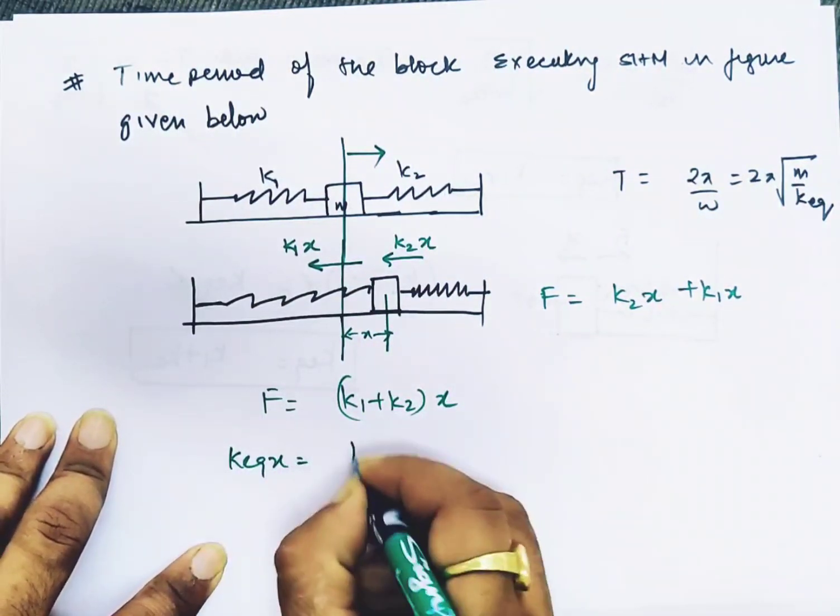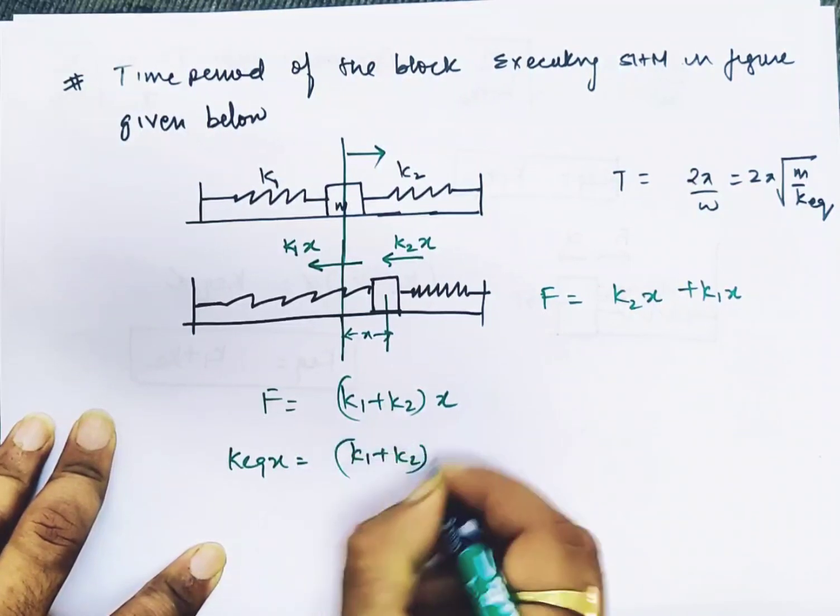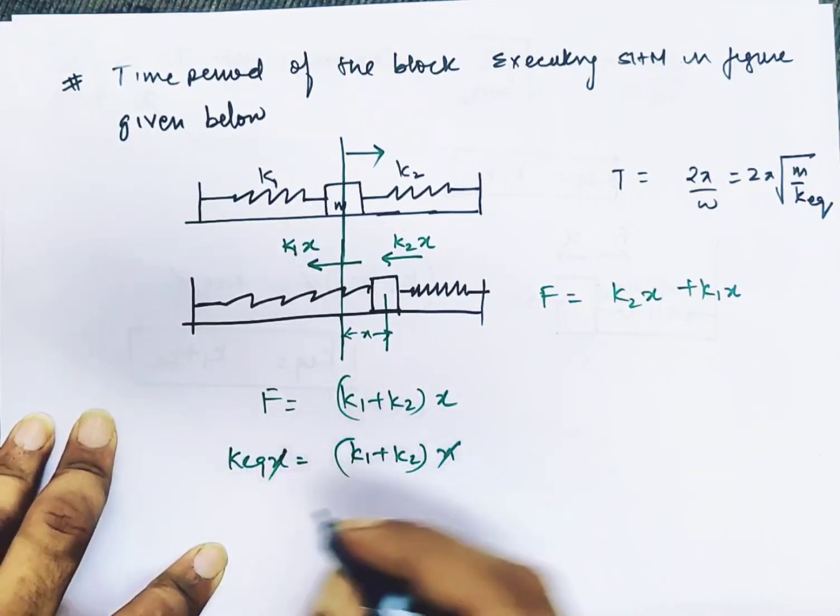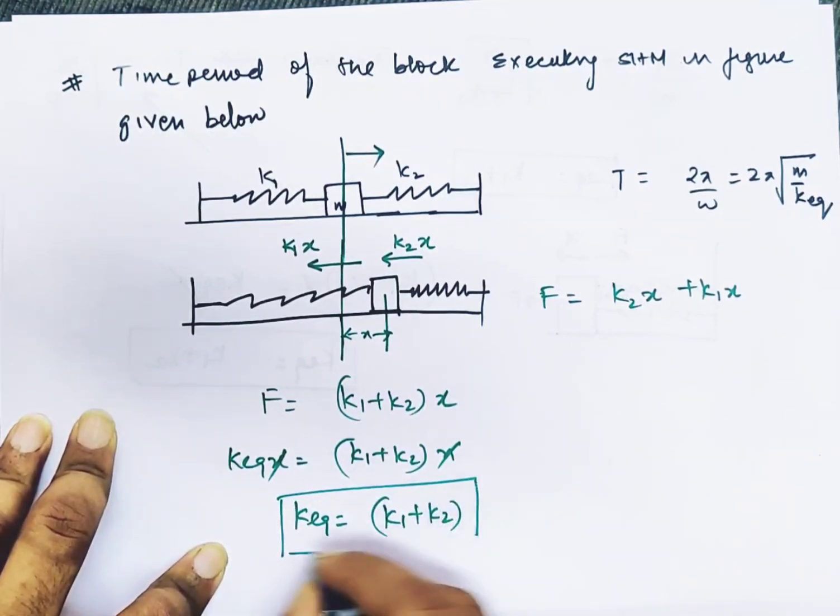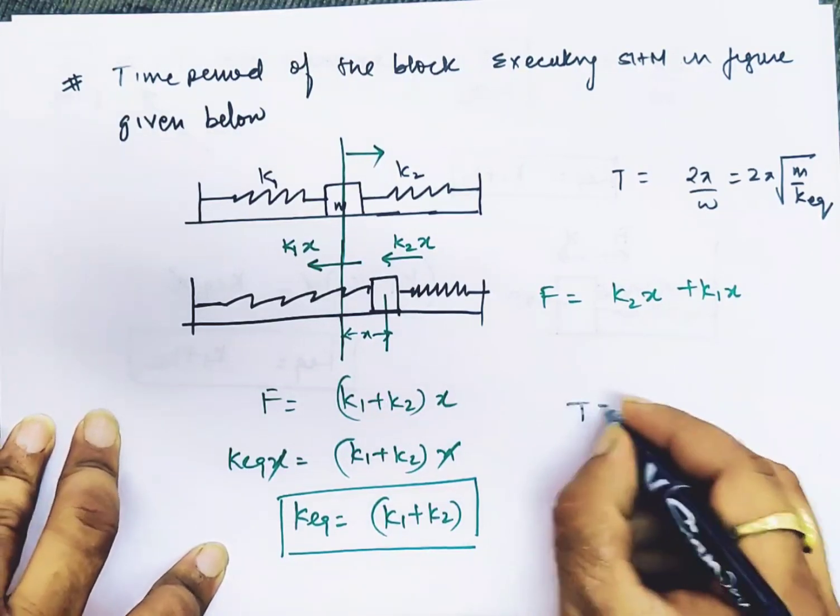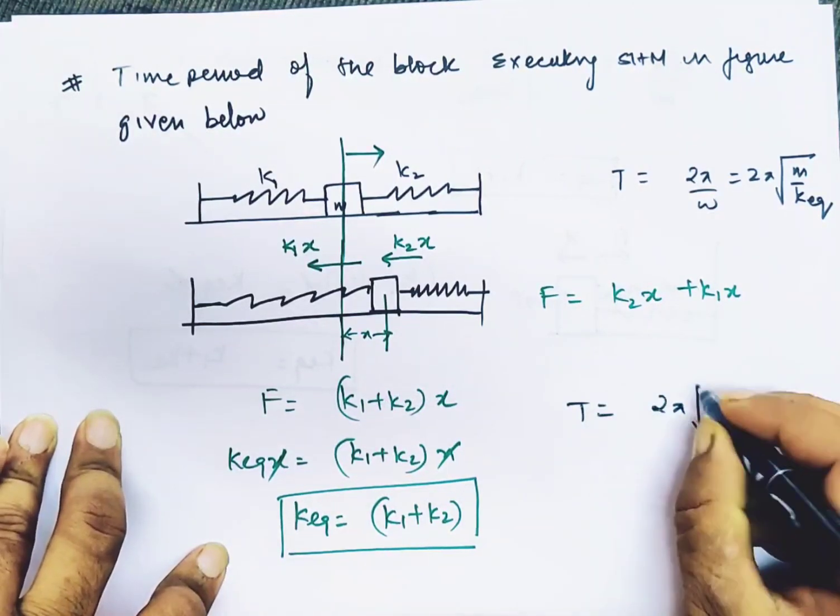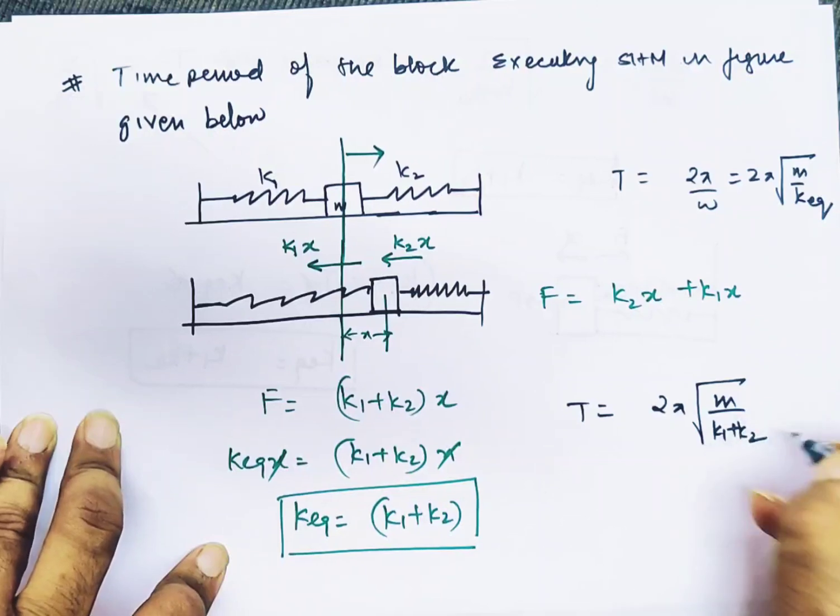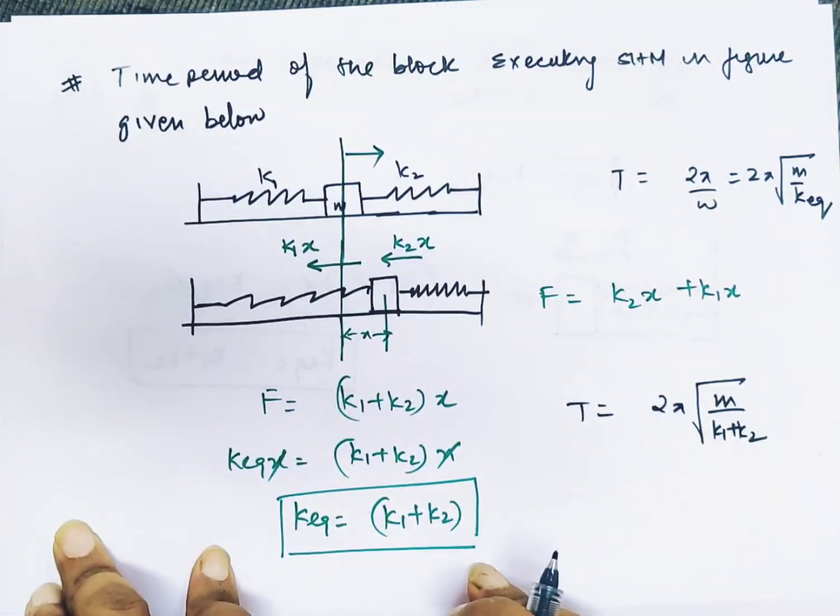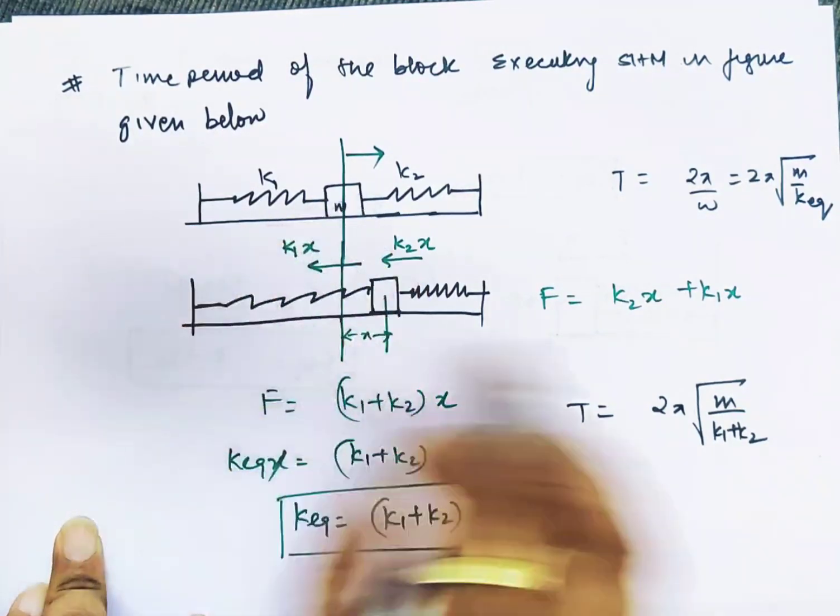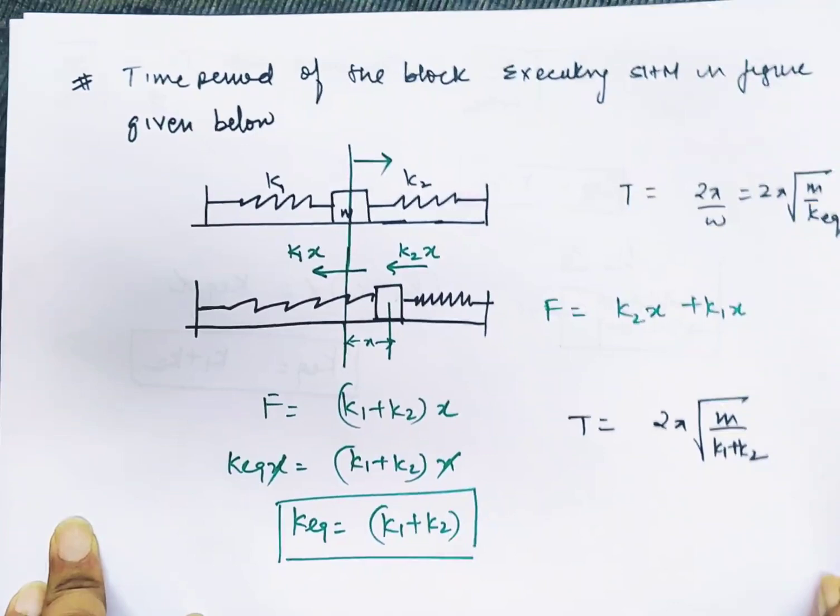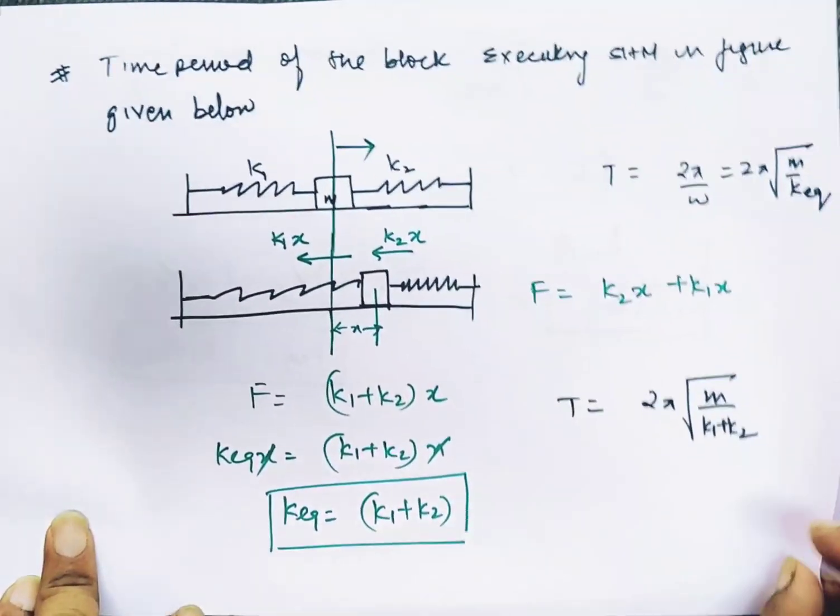This is k_equivalent. The time period is T = 2π√(m/(k1 + k2)). This is a parallel combination of springs. You should know this directly - in any competition exam you can solve this question using this formula.